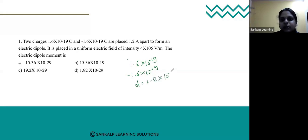Angstrom means 10^-10 meter. One more quantity given is the electric field intensity: 4×10^5 volt per meter. They are asking you to calculate the electric dipole moment.